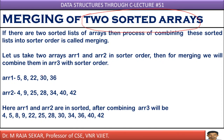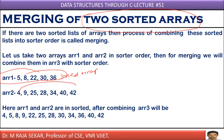It is simple. For example, let me take array 1: 5, 8, 22, 30, 36 — these are sorted arrays. Again, take one more sorted array — array 2: 4, 9, 25, 28, 34, 40, 42. This is another sorted array.